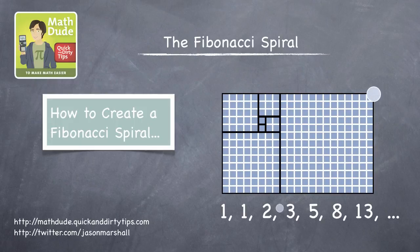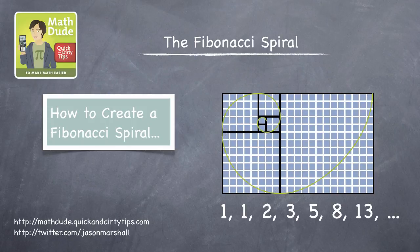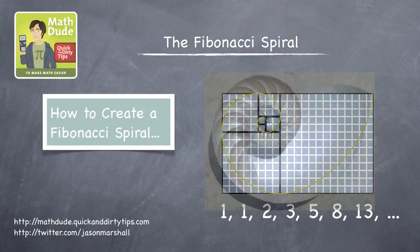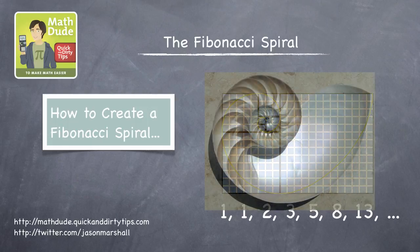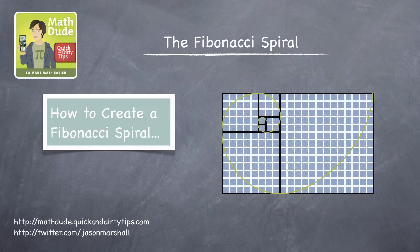Now, let's focus on the diagonal corners of each square, and then draw some sweeping arcs connecting them. What do you get? Indeed, that's roughly a Fibonacci, or golden spiral — a shape which shows up in nature frequently, including the shell of the chambered nautilus, which is related to the octopus.